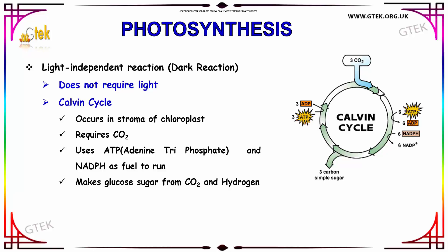It uses ATP and NADPH, which are used as fuel to run. Finally, the Calvin cycle makes glucose — sugar — from carbon dioxide and hydrogen. You can see the whole process of the Calvin cycle here.